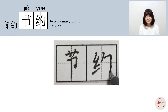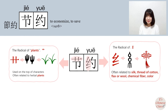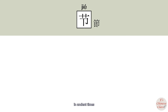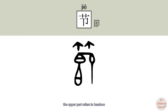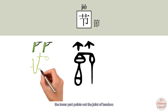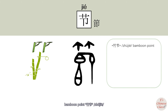节约. In ancient times, 节 was written with the upper part referring to bamboo and the lower part pointing out the joint of bamboo. So the origin meaning of 节 is bamboo joint 竹节. The exact meaning is a point, knot, or joint of a hole.